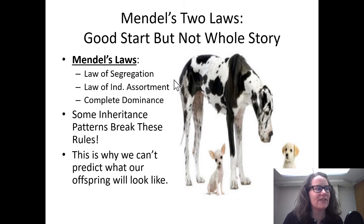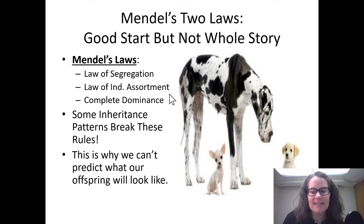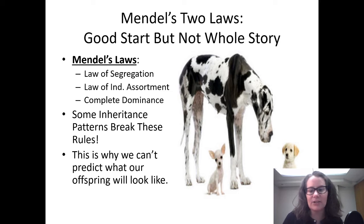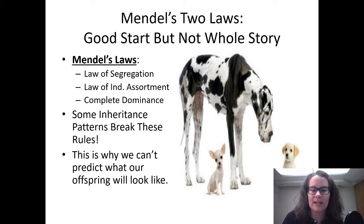He also gave us the law of independent assortment. That law says that alleles for different traits also segregate during gamete formation. So traits like hair color and eye color would not stick together, but are going to sort independently of one another into sperm and eggs.